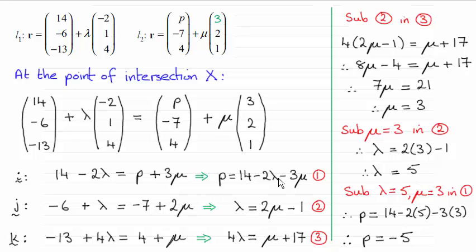So by substituting the values of lambda and mu, 5 and 3 respectively, into equation 1, I establish that P is equal to minus 5. Okay?